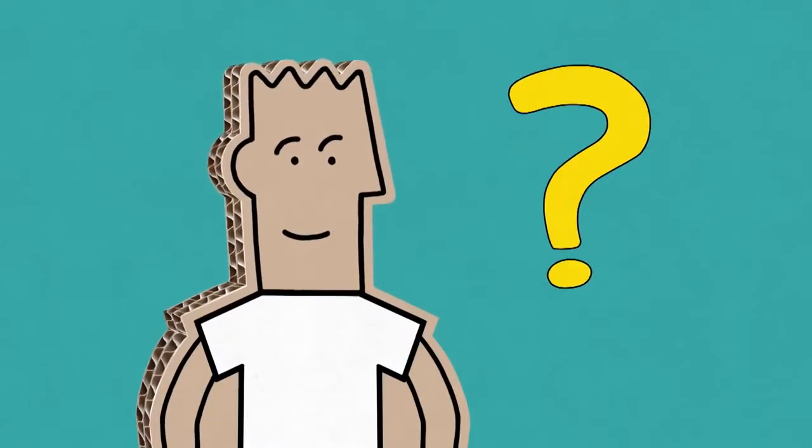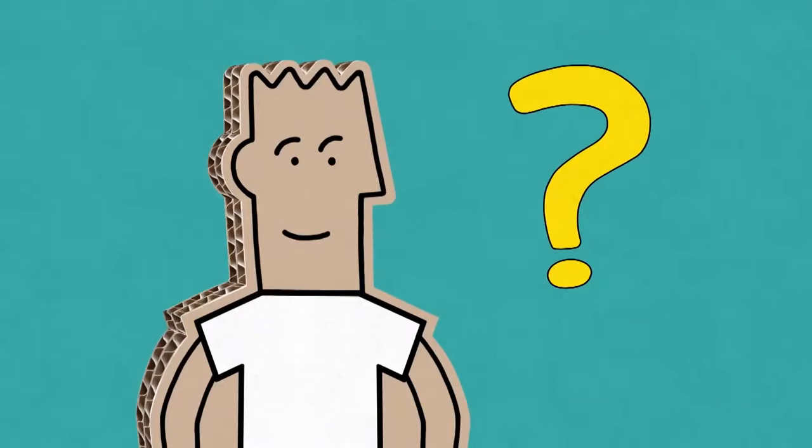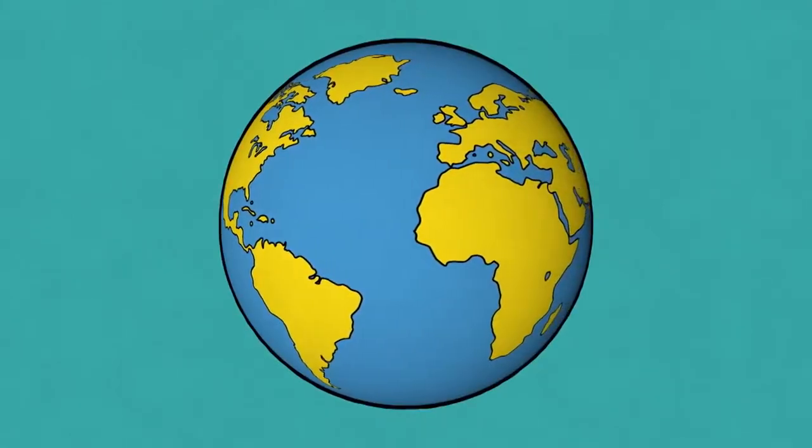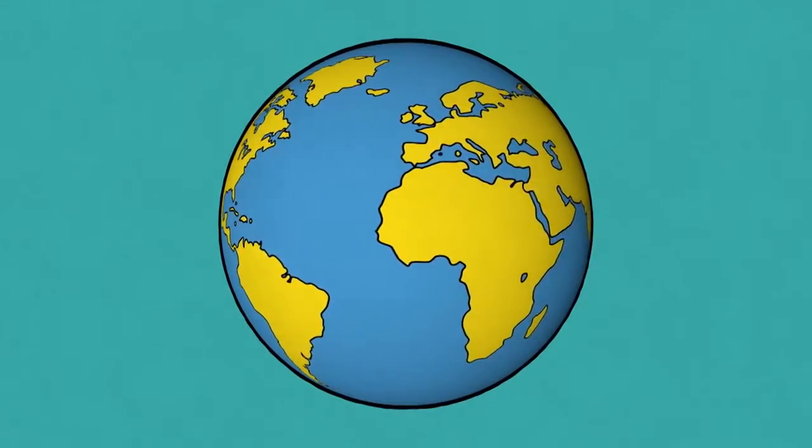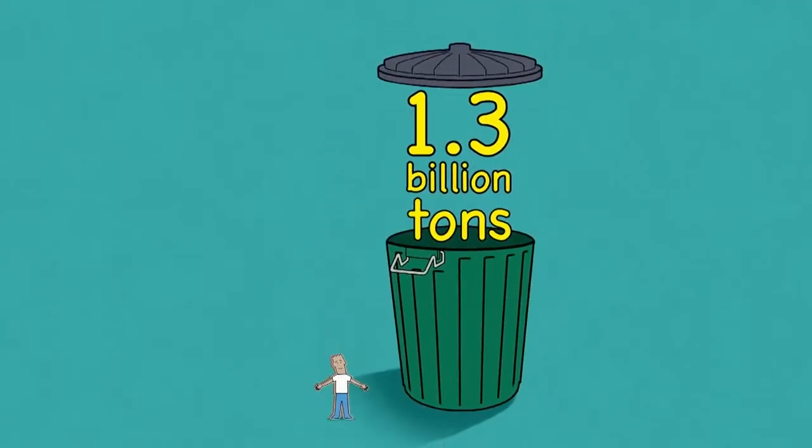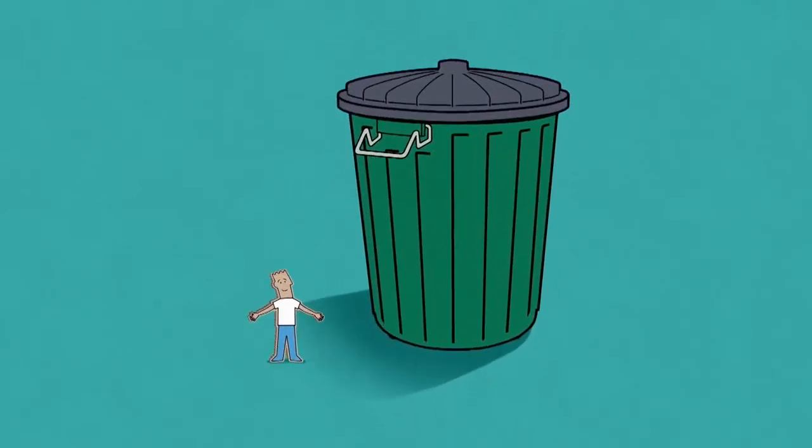But why is protection so important? To prevent product damage and waste. Take food for example. The results of a UN study suggest that one third of food production is lost or wasted globally. And that adds up to 1.3 billion tons every year. Lots of food is wasted, however, before it even reaches the consumer.